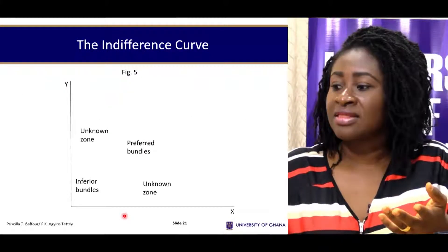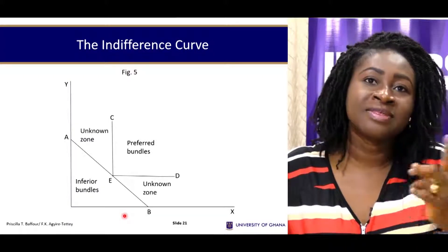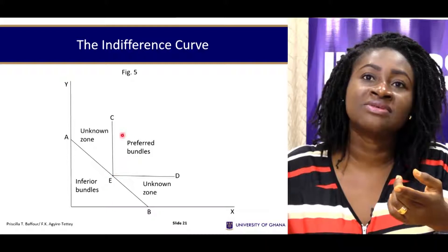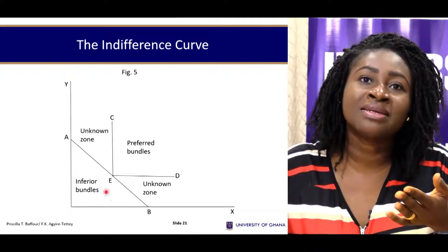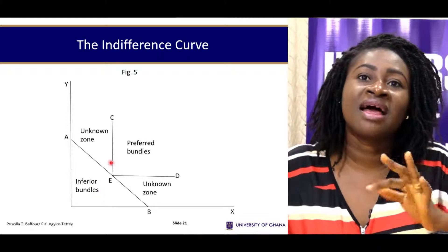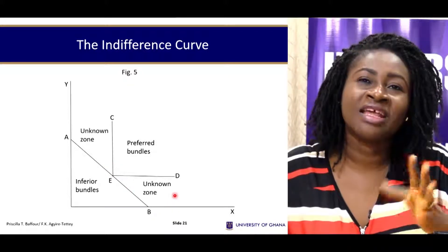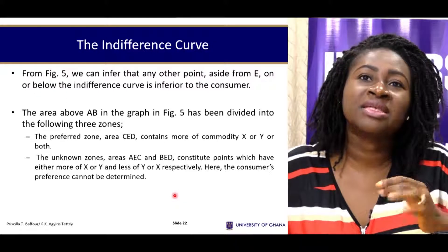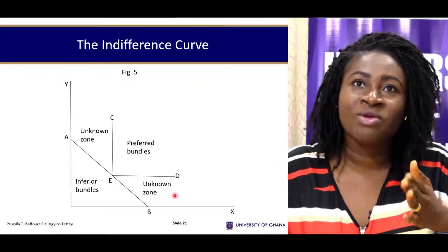In terms of the indifference curve, the concept is quite similar — revealed preference diagrams are used to indicate preferred zones. A preferred bundle gives a miniature indifference curve. We also have inferior bundles, which are bundles within the opportunity sets discussed under the ordinal approach. The area between these zones is unknown to the consumer, as they don't have adequate knowledge of that region.